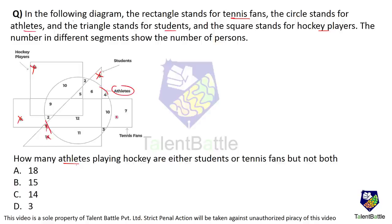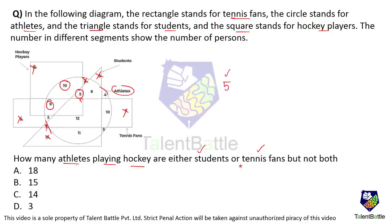Playing hockey is denoted by the square. So inside the square and circle, we have three relevant numbers: 10, 9, and 5 — these are athletes playing hockey. They have to be either students or tennis fans. Students are denoted by the triangle — inside the triangle is 5, so 5 qualifies. Are those five also tennis fans? Tennis fans are inside the rectangle — 5 is not inside the rectangle, so we can use 5.